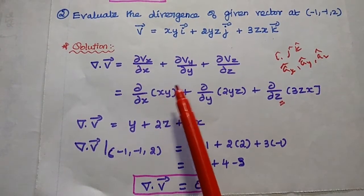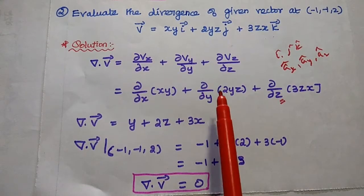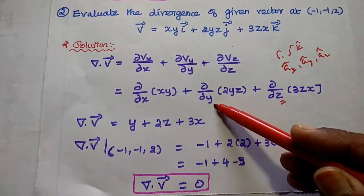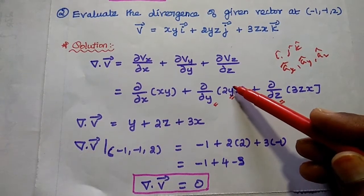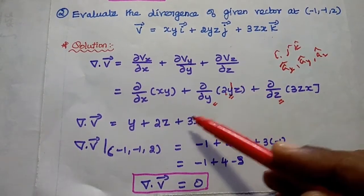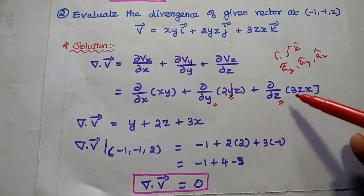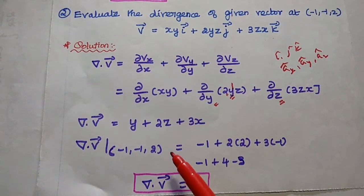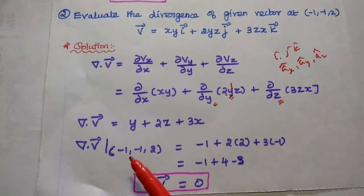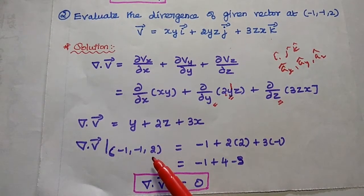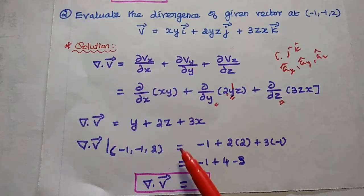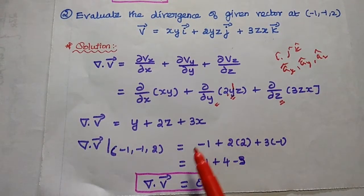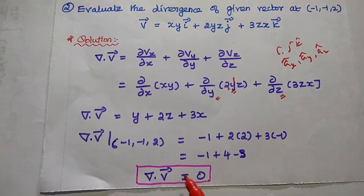Differentiating 2yz with respect to y gives 2z. Differentiating 3zx with respect to z gives 3x. So del dot V = y + 2z + 3x. Now we substitute the given point x = −1, y = −1, z = 2. Substituting those values into the divergence expression gives the answer 0.